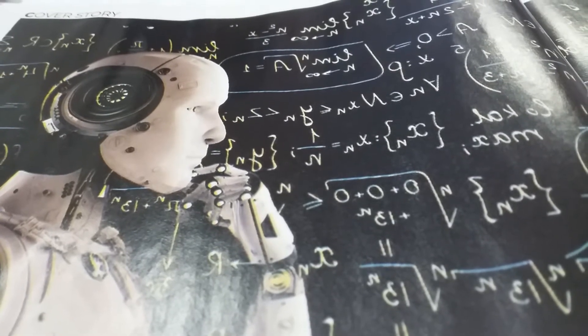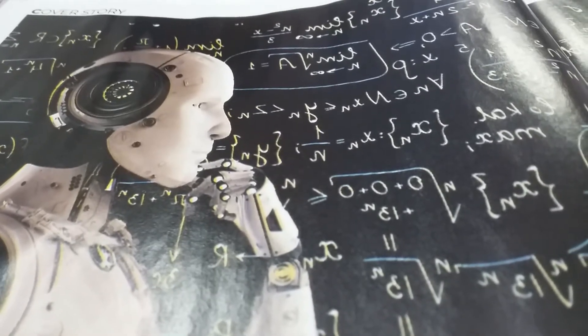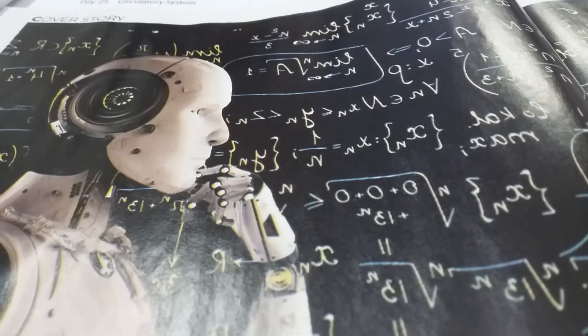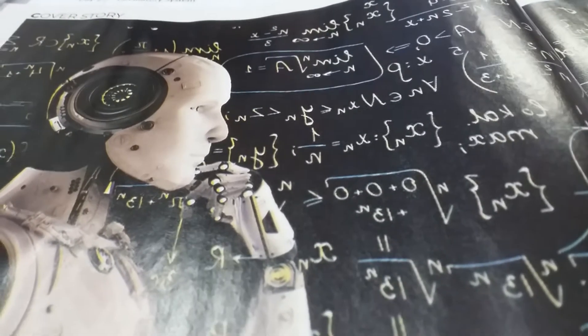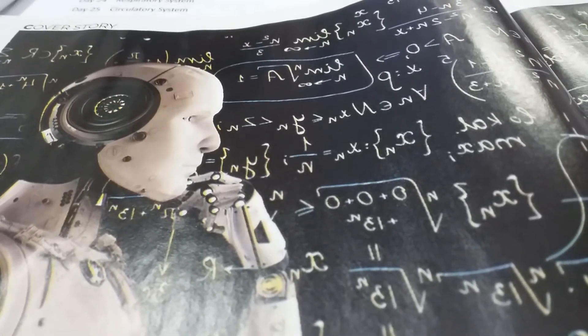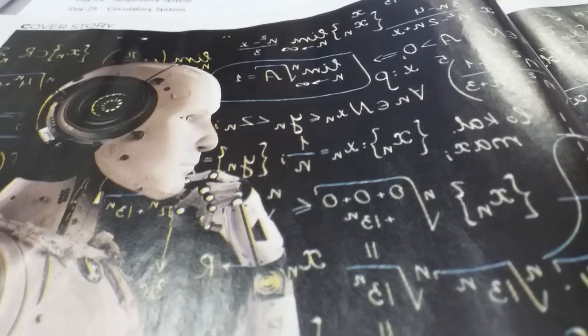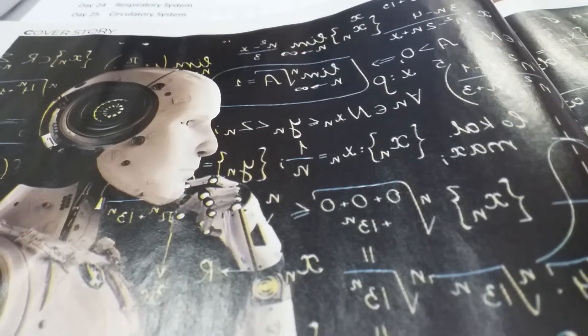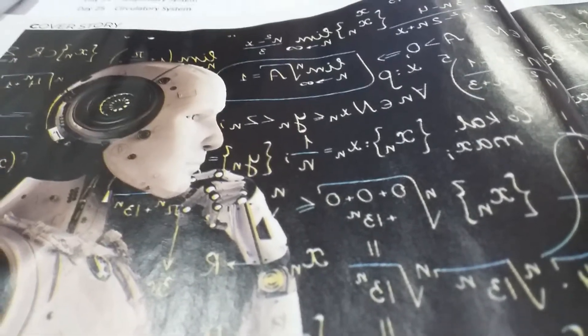Nobel Prize facts in Hindi: Arthur Ashkin became the oldest Nobel Prize winner at 96. Previously, American Leonid Hurwicz won the Economics Nobel at age 90. Since 1901, the Physics Nobel has been awarded 112 times. Three women have won: Marie Curie in 1903, Maria Goeppert-Mayer in 1963, and Donna Strickland in 2018. John Bardeen won twice in 1956 and 1972. Lawrence Bragg at 25 was the youngest winner in 1915 with his father.